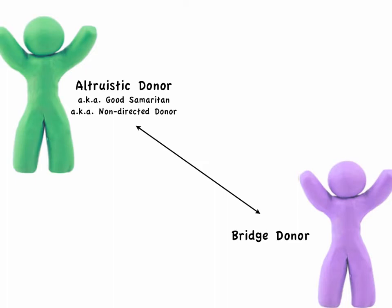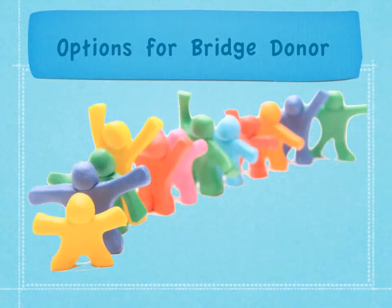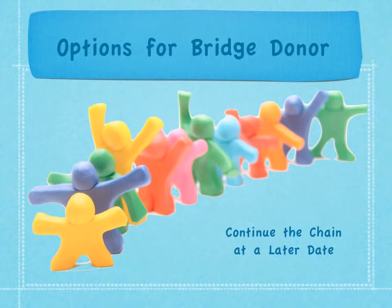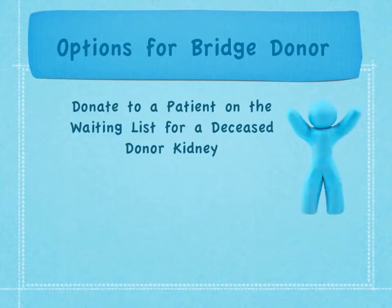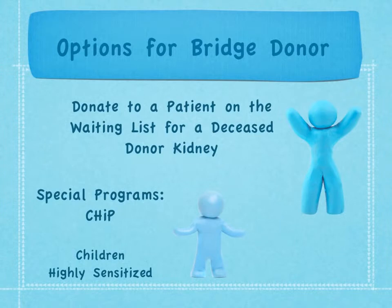The bridge donor is now free to start another transplant chain once an appropriate recipient is identified. There are several options for the bridge donor. One option is to continue the chain forward at a later date once a potential recipient is identified through the registry. A second option is for the bridge donor to donate their kidney to a patient on the waiting list for a deceased donor kidney — this may occur if there isn't a matched recipient within the registry or if the donor's personal situation is changing and they cannot wait. In some KPD programs, specific groups such as children or highly sensitized patients — those with high antibody levels against potential donors — may receive a bridge donor kidney.